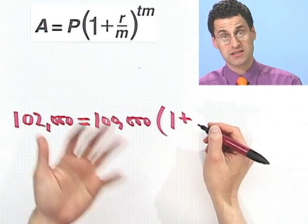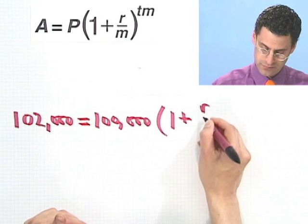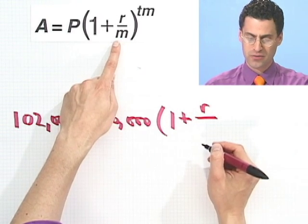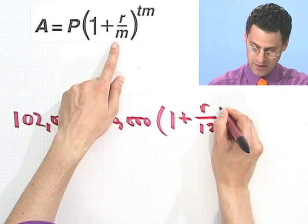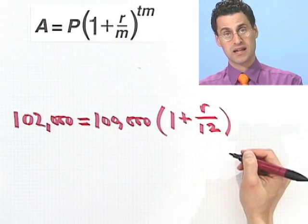Well, we don't know what the rate is. That's our mission, is to find the rate. How much compounding do we have per year? Well, it's monthly, so that's 12.